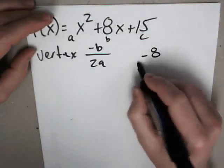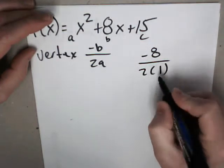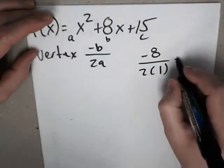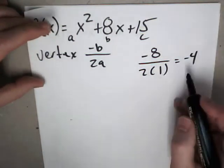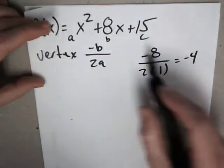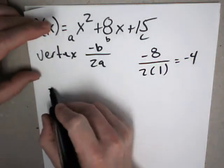So negative 8, 2 times 1. 1 would be your a value. So negative 4 is the x value of the vertex. So to find out what the other value is, you plug it back in to figure out what that would be.